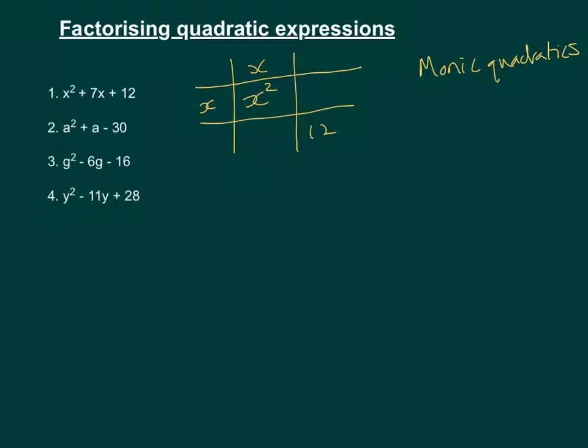And then the second bit is just to find, we know that these two numbers here multiply to make 12, but they need to add to make 7. So the way that I do that normally is by writing out the factors of 12 and seeing which ones will add to make 7.